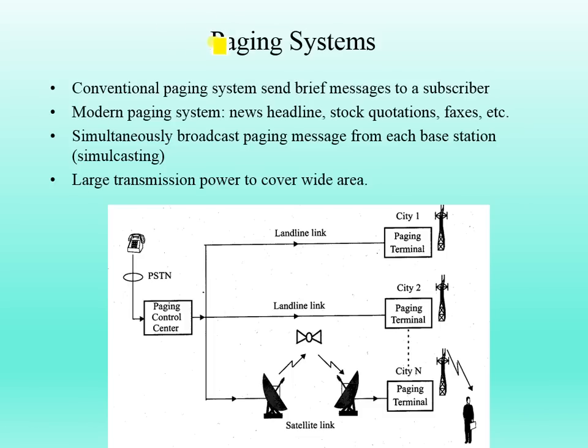The paging system was very famous in the 1990s. A conventional paging system sends brief messages to a subscriber. Modern paging systems can deliver news headlines, stock quotations, and facts. It simultaneously broadcasts paging messages from each paging station and requires large transmission power to cover a wide area.